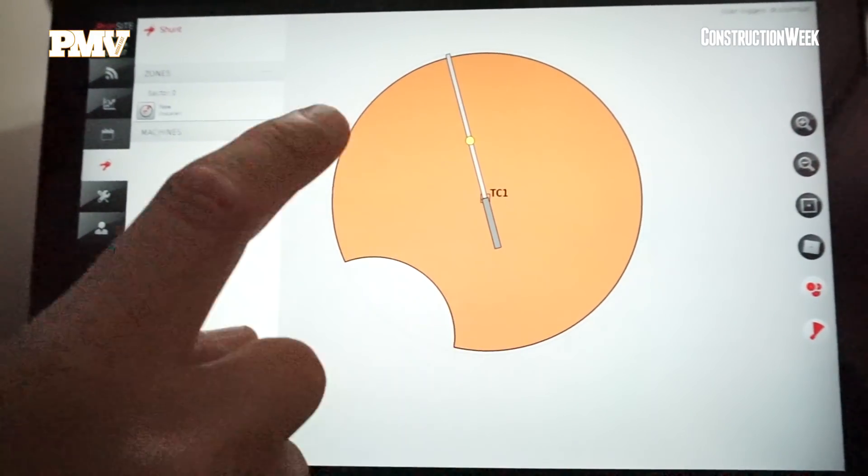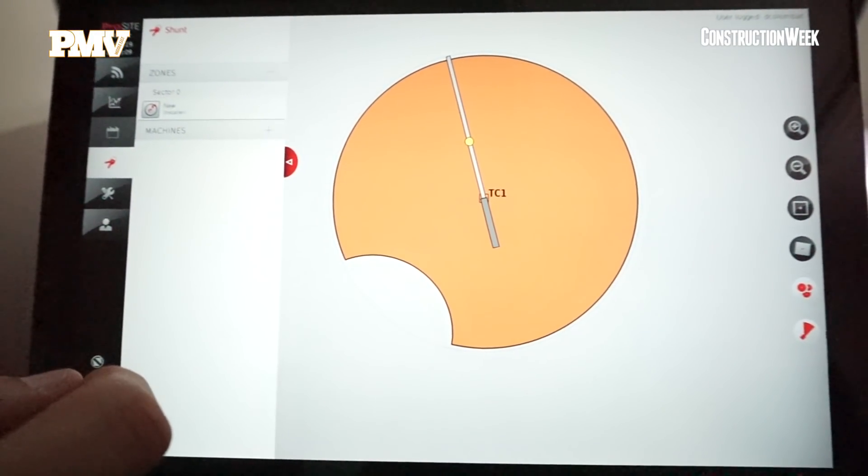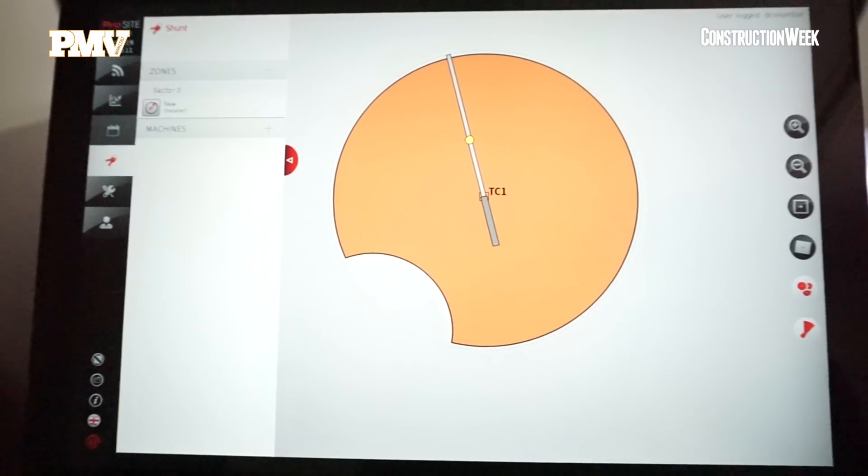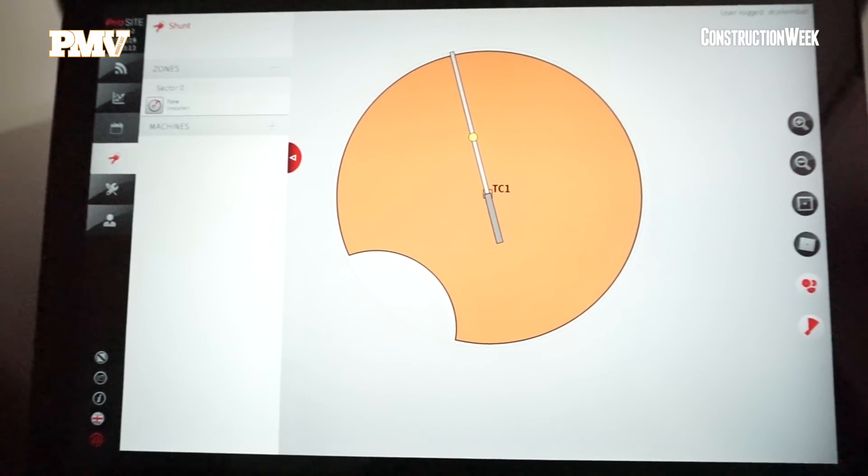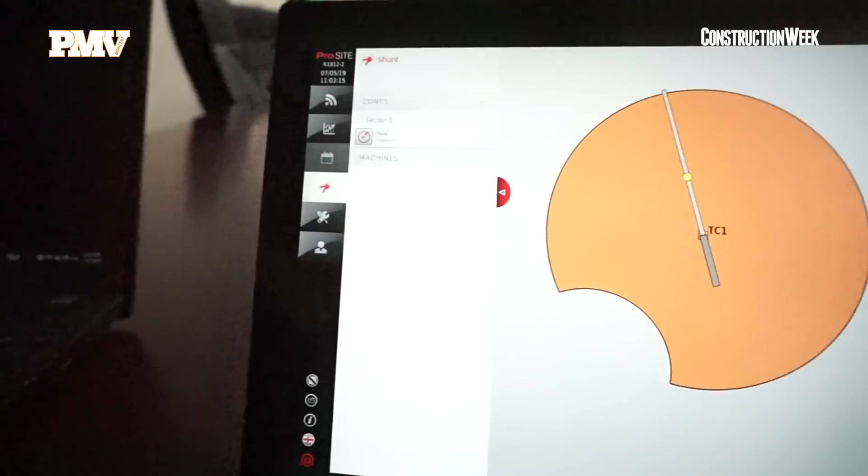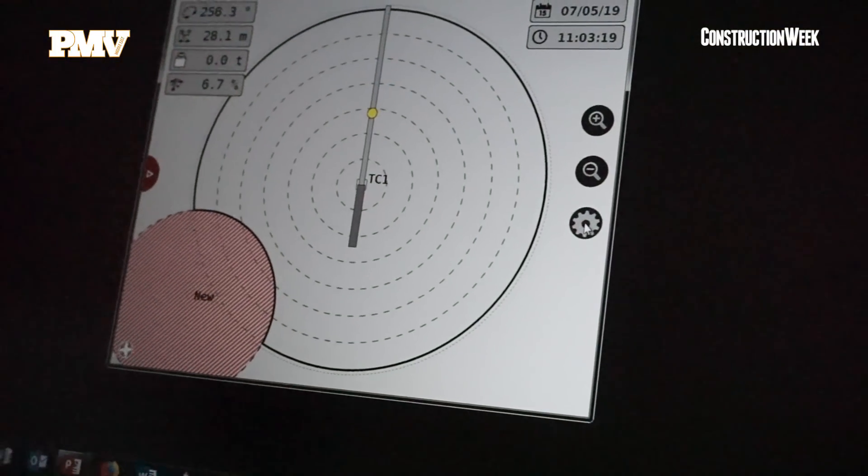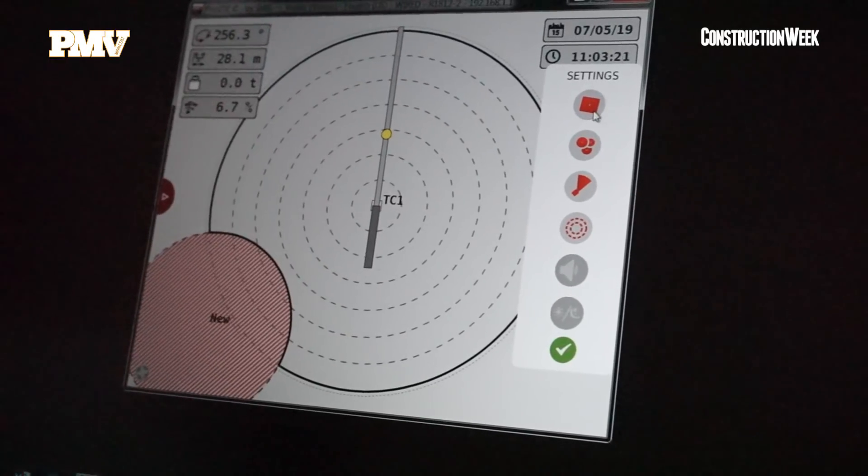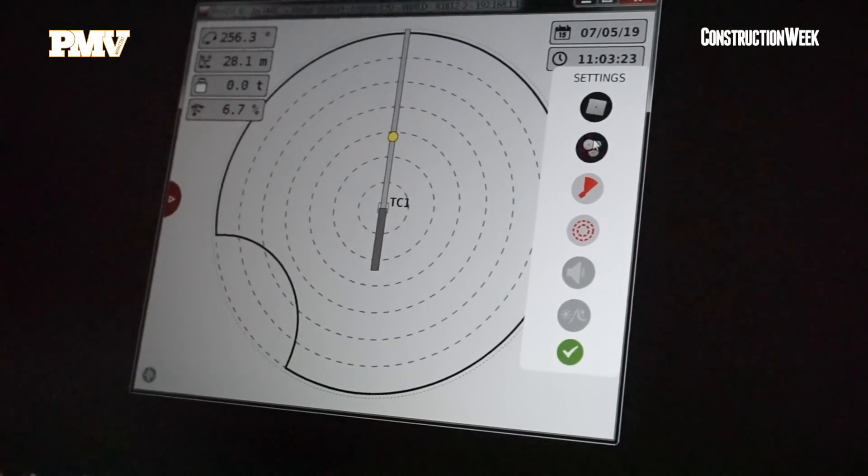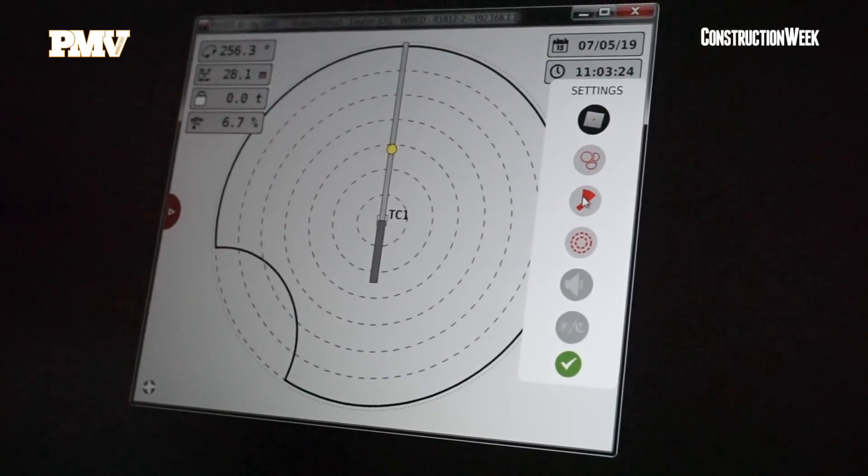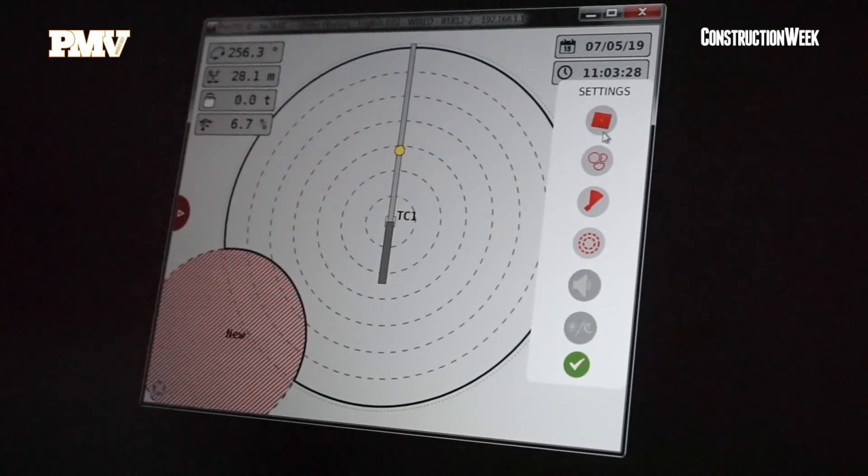And I can see the limit of the zone where the crane can operate. And same story here, on the crane operator display. I can show the zone and I can show where the operator is actually working.